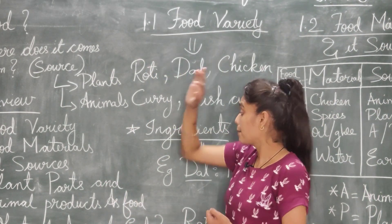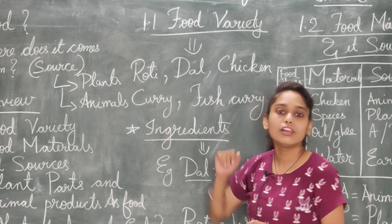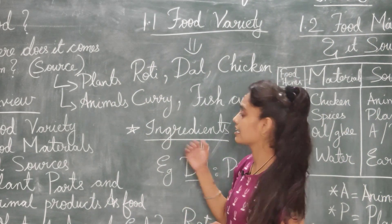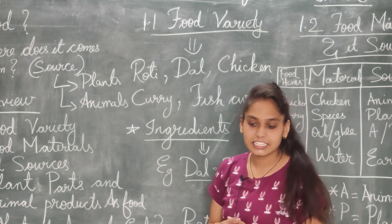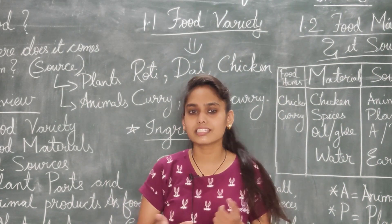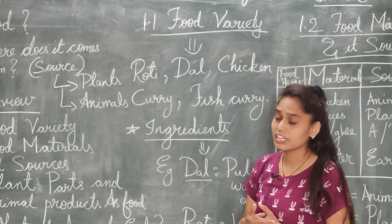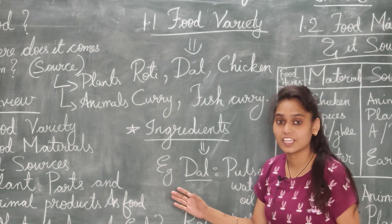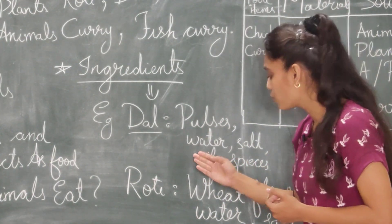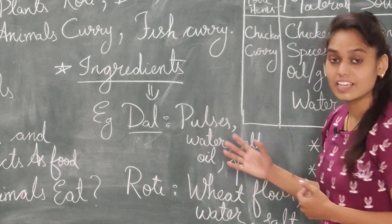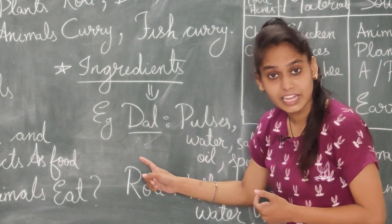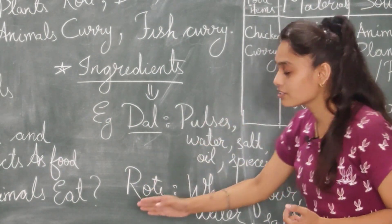Food varieties में जैसे roti हुई, दाल हुई — ये सब किससे बनती है? उन चीज़ों को हम ingredients बोलते हैं, जैसे सामग्री। जैसे दाल में कौन-कौन से ingredients चाहिए? That is pulses, water, oil, spices and salts — ये सारी चीज़ों के साथ हम दाल को cook करते हैं। तो दाल हो गई हमारी variety और ये हो गए हमारे ingredients।